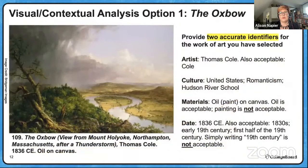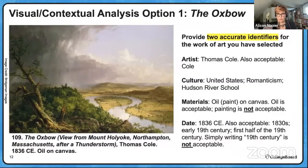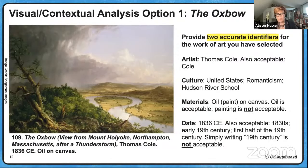Let's get started with how we might answer this prompt. We always start with our identifiers — you're given the title in the prompt, so any two of these additional ones will work: the name of the artist Thomas Cole (or just Cole — can't just use Thomas), Romanticism, Hudson River School, United States. But only one of those counts as one identifier. You can't say 'United States Romanticism' and get the identifier. We're talking about one from culture and artist, or one from culture and materials, then the date range.